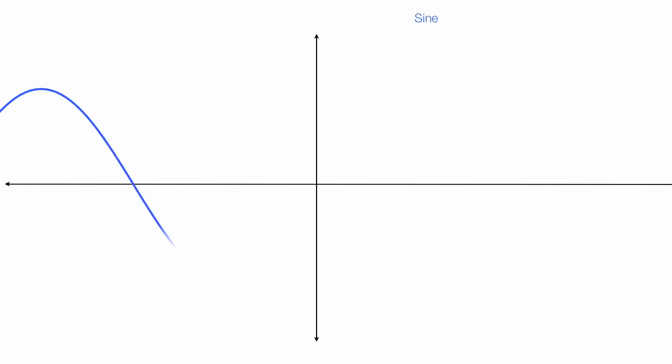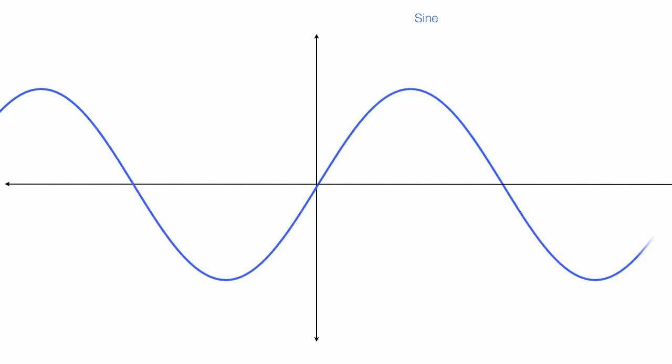The sine function, or the sine wave, is a repeating function that oscillates. If I take the first derivative of the sine function and find the slope of a tangent line, it is always cosine.